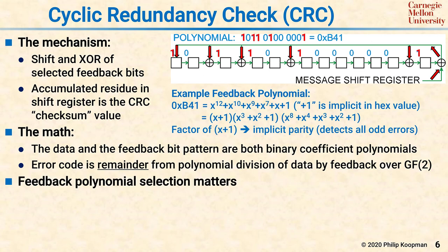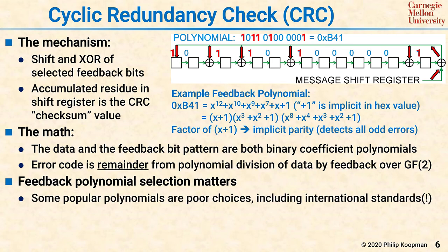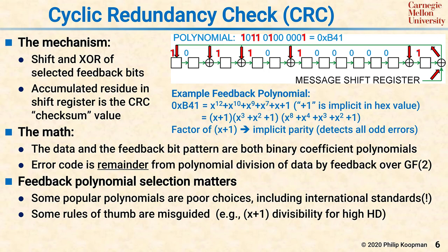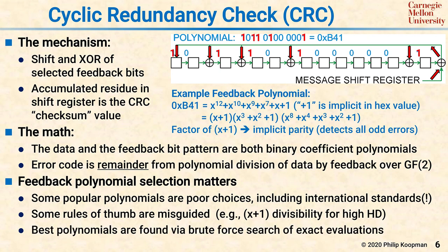The feedback polynomial selection matters. Some polynomials are good for error detection, and some are really bad. Some of the bad ones include commonly used international standards, so you cannot simply say this polynomial is popular so it's good — that's not always true. There are also some rules of thumb that may be true but are misguided. For example, there's a common rule that you always want x plus 1 divisibility to get high Hamming distances, and that's simply not true. x plus 1 always gives you parity, but sometimes getting parity actually makes it a lot harder to get a good Hamming distance. Despite many years of mathematical approaches trying to derive good polynomials, for Hamming distances higher than 4, the most effective way to find a good polynomial is brute force search of trying all the polynomials to see which one does best.